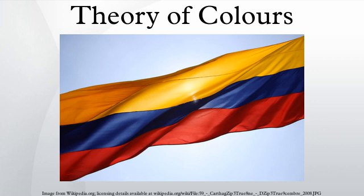Goethe also included aesthetic qualities in his color wheel under the title of allegorical, symbolic, and mystic use of color, establishing a kind of color psychology. He associated red with the beautiful, orange with the noble, yellow with the good, green with the useful, blue with the common, and violet with the unnecessary. These six qualities were assigned to four categories of human cognition: the rational to the beautiful and the noble, the intellectual to the good and the useful, the sensual to the useful and the common, and imagination to both the unnecessary and the beautiful.